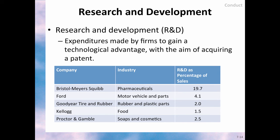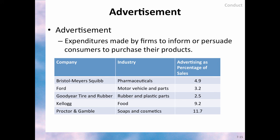In a knowledge-driven economy, companies must constantly be innovating and positioning themselves at the forefront of technology. This implies research and development — R&D for short — which are expenditures made by firms to gain a technological advantage, mostly with the aim of acquiring a patent. As seen in this table, companies in some industries spend sizable amounts in R&D as a percentage of sales. Similarly, firms must constantly reach out to their customer base through advertisement, which are expenditures made by firms to inform or persuade consumers to purchase their products. Companies in some industries also spend sizable amounts in advertising as a percentage of sales. Both expenditures in R&D and advertising can have an important impact on the market structure.